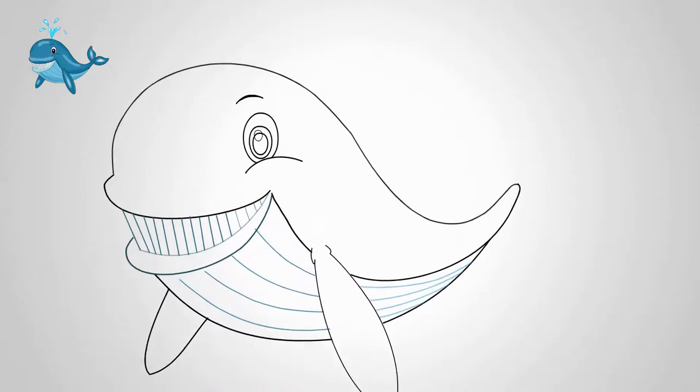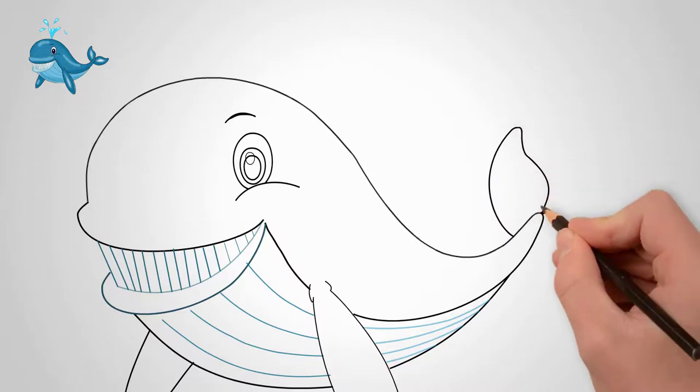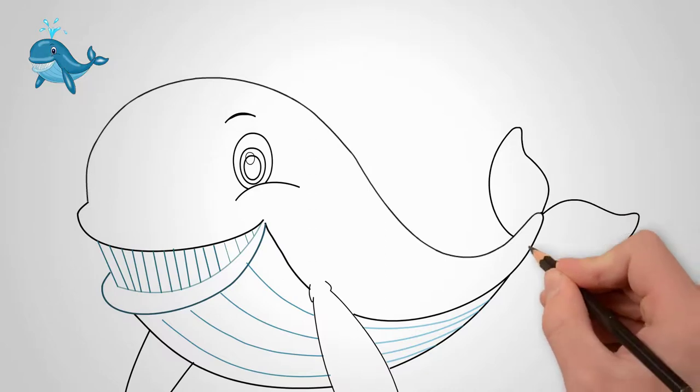In the tail of the whale draw two fins. These are caudal fins. They are symmetrical to each other. These two fins help the whale to swim, to control the direction of movement.